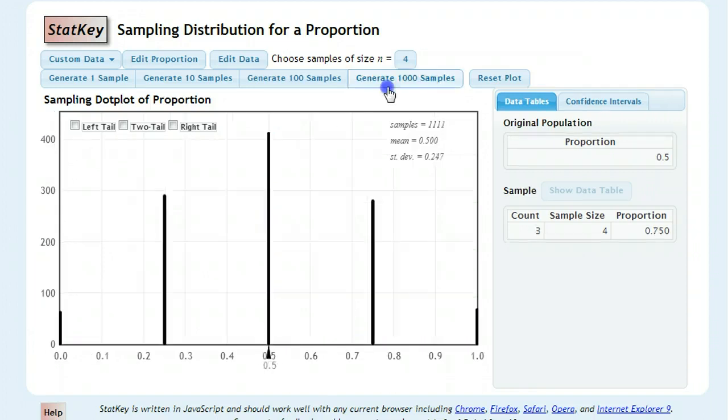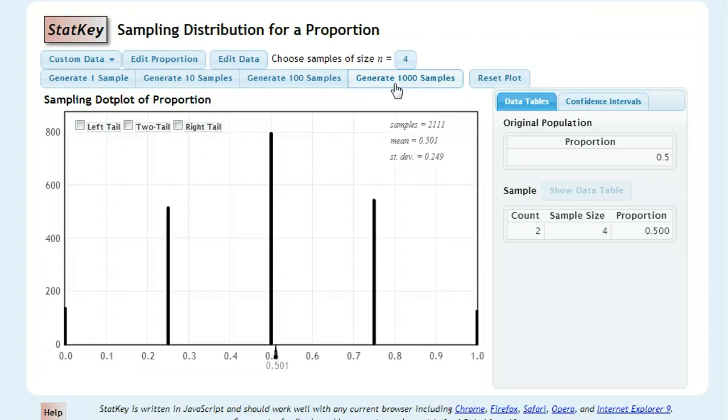We can generate 1,000 samples. See if this pattern holds true. 2,000 samples. And you can see that we get this general peak, where most of them end up in the middle. And in fact, the middle being 0.5 is exactly what the whole population is.